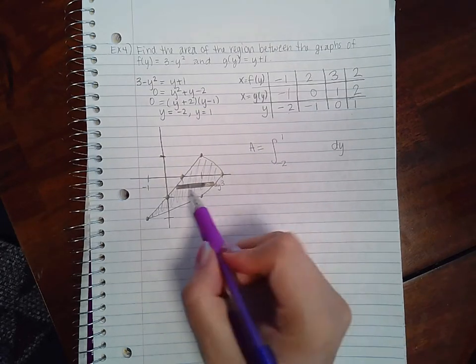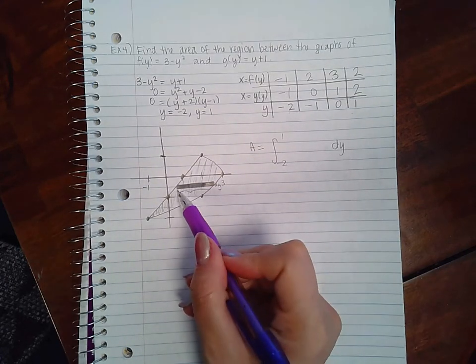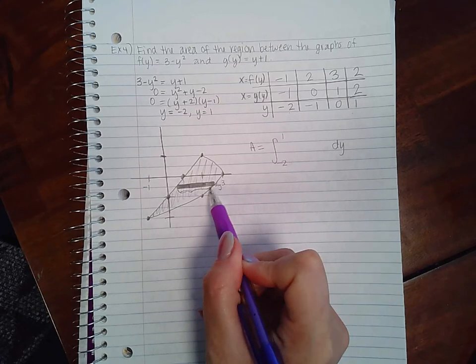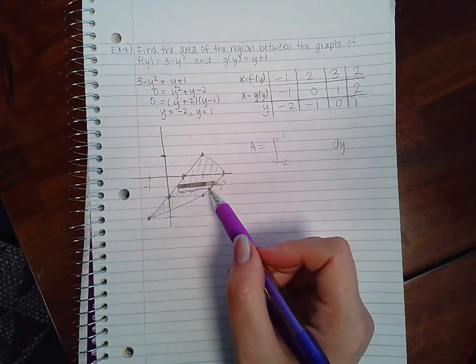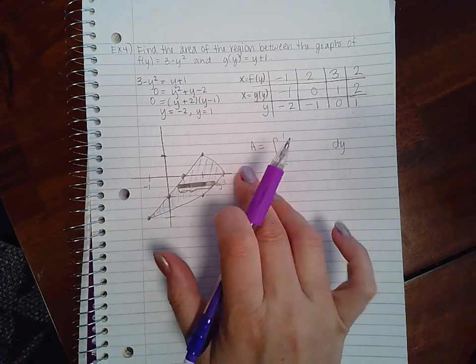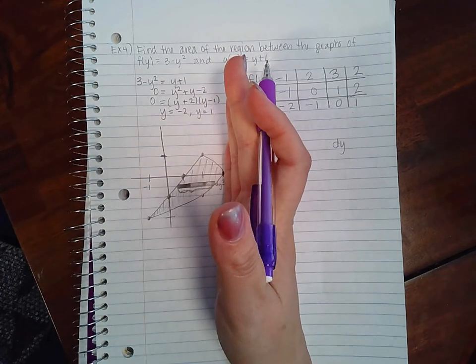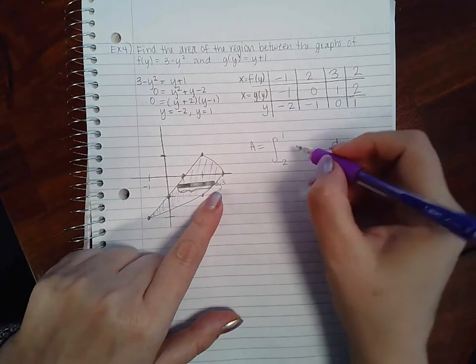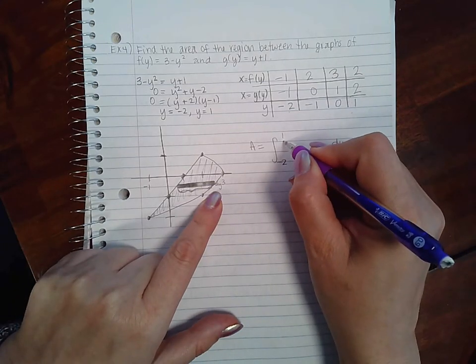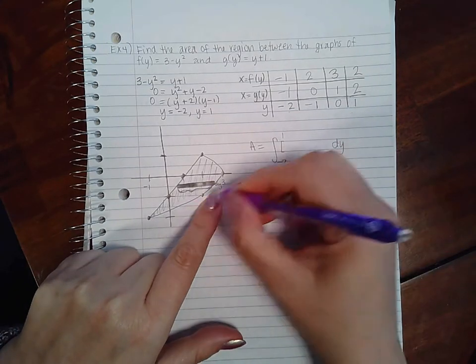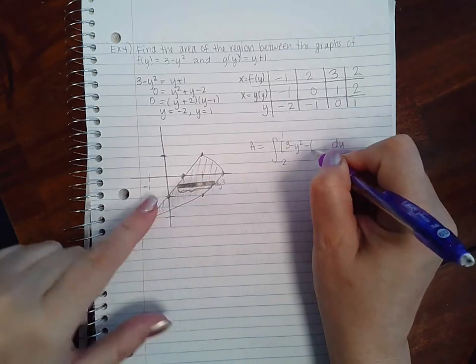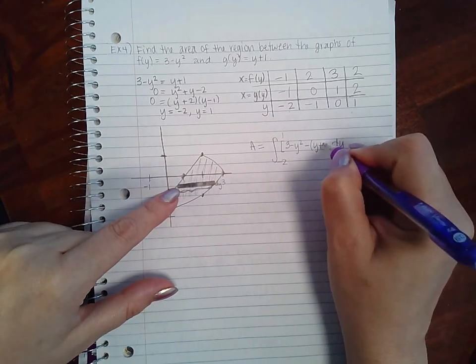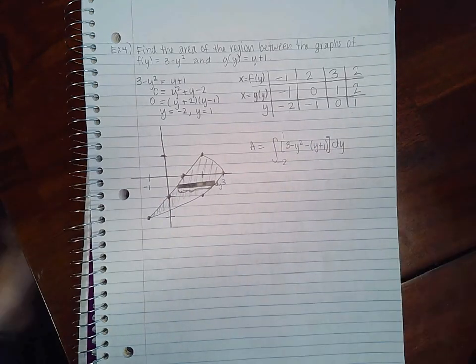Now the height, or actually in this case because of the way it's facing could be considered length - the length of the rectangle should always be the greater function minus the lower function. On the number line the right hand sides are greater than the left hand side, so in here I should have my curved function which is 3 - y² minus the straight function which is y + 1.